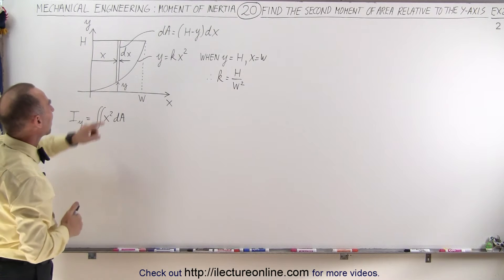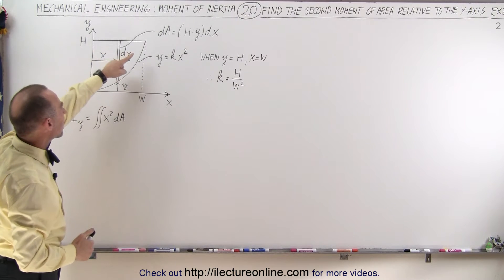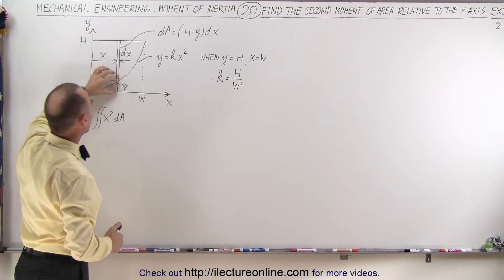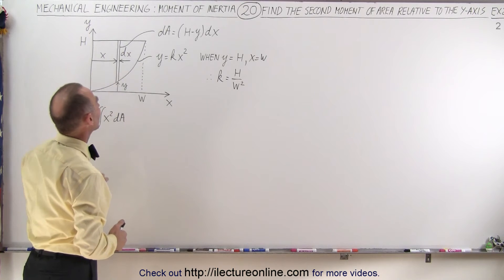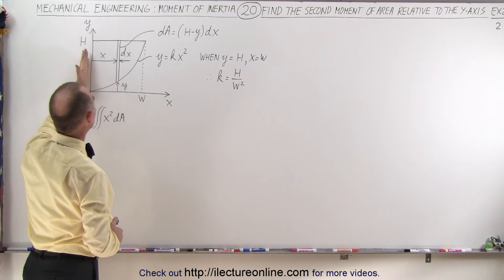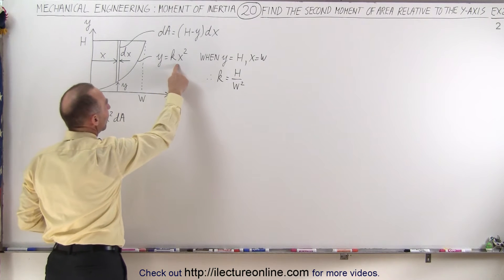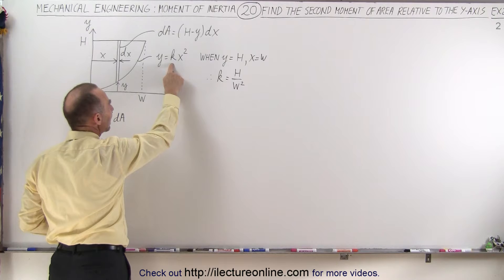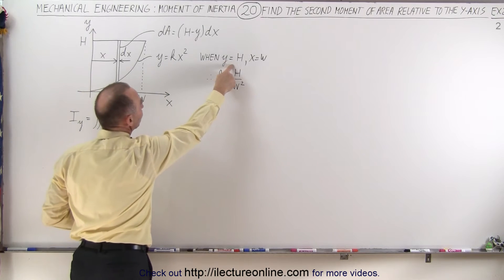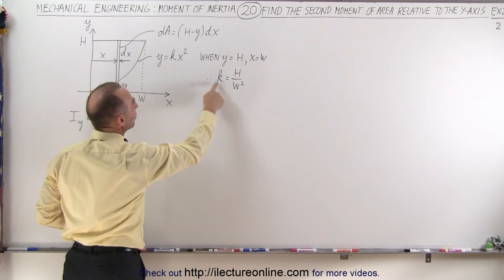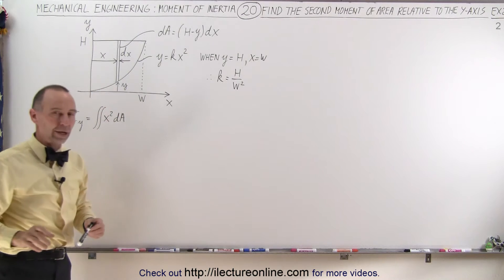We have a small area element dA which is the height minus y times the thickness dx. We're going to integrate from x equals 0 to x equals w. The equation y equals kx squared, we can find k by assuming that when y equals h, x equals w, so k equals h divided by w squared.